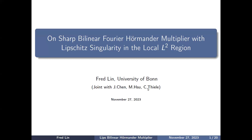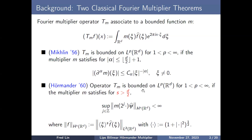Thanks for the invitation from the organizers. Today I'm talking about Fourier multiplier results. This is joint work with Jiao Chien, Martin Xi, and Christophe. Let us start from two classical Fourier multiplier theorems. A Fourier multiplier T_m associated to a bounded function m is the operator where you first take the Fourier transform of f, multiply by m, then apply the inverse Fourier transform.